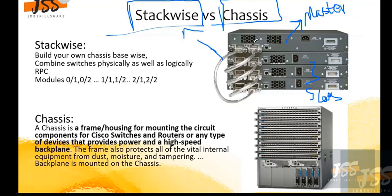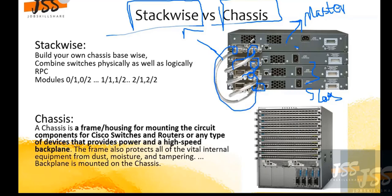So let's talk about StackWise — building your own chassis. This is how you can build something like that in your LAN environment or a small-to-medium enterprise. We are combining these switches physically as well as logically. As you can see, we connect from switch one to switch two, switch two to switch three, third to fourth, and the fourth goes back to the first — forming a ring. This way they share information and function with one brain, handled by the master.